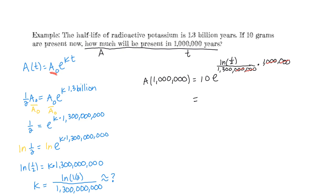To answer the question, we plug into our function: A of 1,000,000 equals 10 times E to the power of the natural log of one half over 1,300,000,000 times 1,000,000. When we plug that into a calculator, we get 9.99467 grams. We started with 10 grams and barely decayed by a thousandth of a gram in a million years — which confirms our initial hypothesis.